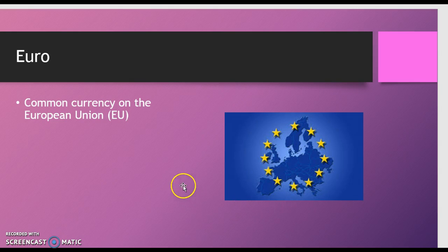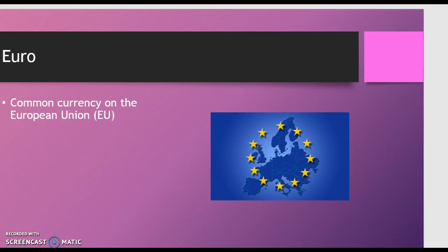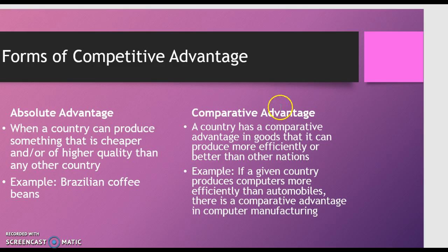There are two forms of competitive advantage: absolute and comparative. Absolute advantage is when a country produces something that is cheaper and/or of higher quality than any other country — an example is Brazilian coffee beans. A country has a comparative advantage in goods that it can produce more efficiently or better than other nations. For example, if a given country produces computers more efficiently than automobiles, there is a comparative advantage in computer manufacturing.